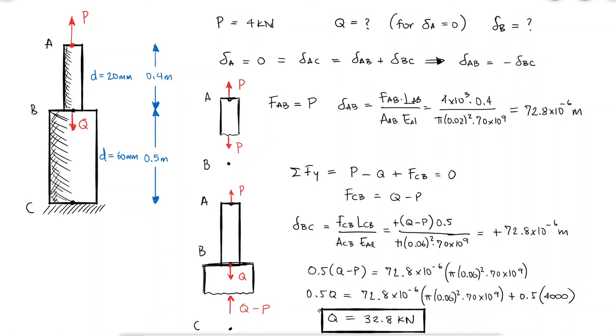Since the absolute deflection of B is the same as the deflection of B with respect to C since C is the wall, the deflection of B would be equal to minus 72.8 microns.